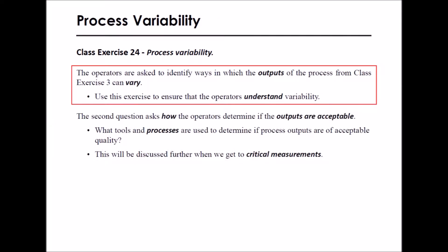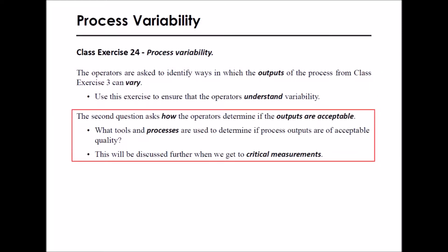In Class Exercise 24, the operators are asked to identify ways in which the outputs of the process from Class Exercise 3 can vary. Use this exercise to ensure that the operators understand the concept of variability. The second question asks how the operators determine if the outputs are acceptable — what tools and processes are used to determine if process outputs are acceptable? This will be discussed further when we get to critical measurements.